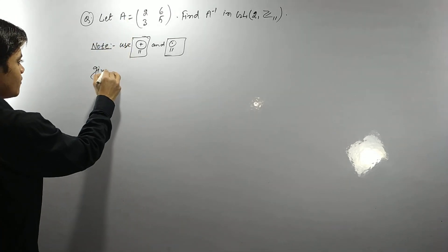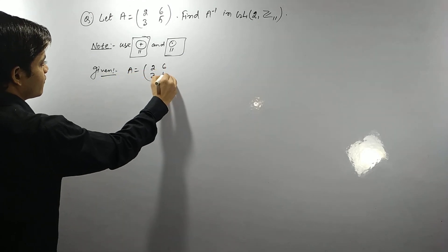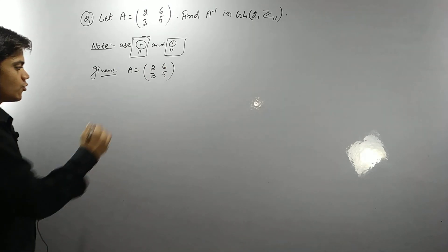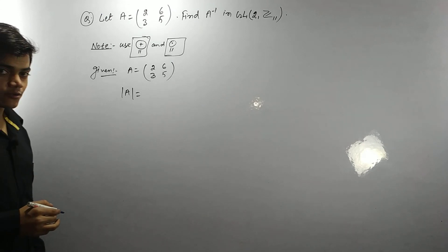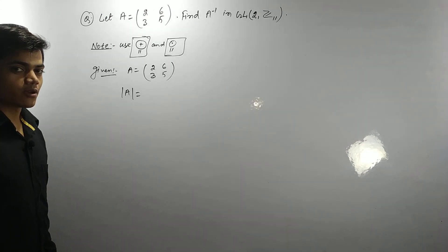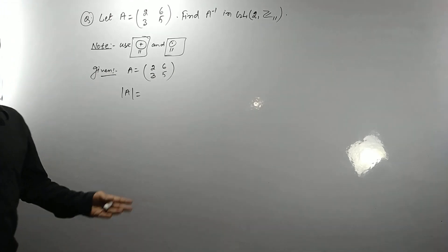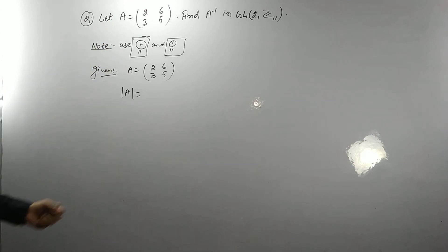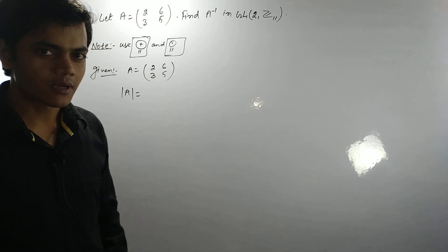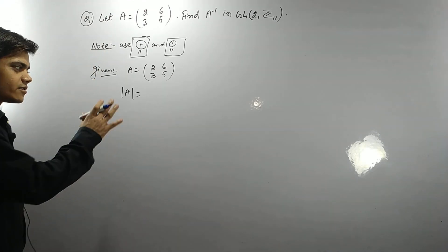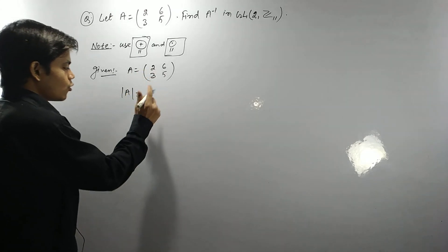Now we have to find the inverse of A. The given matrix is A = [[2, 6], [3, 5]]. First of all, you have to find the determinant of A. If the determinant is zero, then this matrix is singular and we cannot find its inverse. So the determinant must not be equal to zero — only then we will be interested in proceeding.